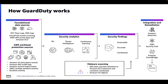These log sources include AWS CloudTrail Management Events that helps customers find anomalous activity associated with IAM roles, VPC flow logs to detect communication with known command and control servers or crypto mining pools, and DNS logs to detect resources reaching out to malicious domains.